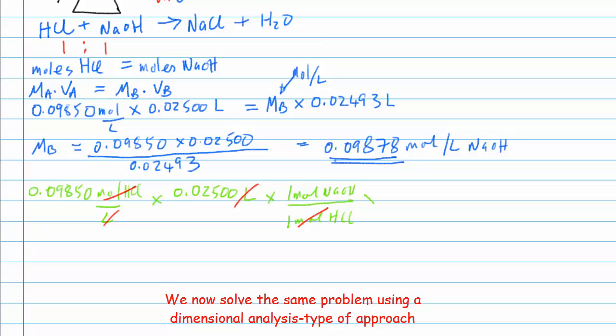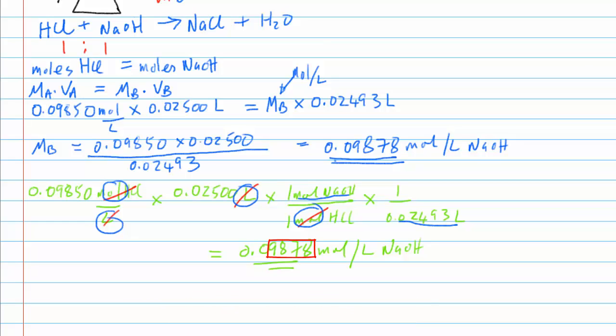Finally, we need to multiply this by this ratio here, 1 over 0.02493 liters. If we plug all of these values into our calculator, we should get the result of 0.09878 moles per liter of sodium hydroxide. Check back that all our units cancel, our moles of HCl cancel, our liters of HCl cancel. We're left with units of moles of sodium hydroxide divided by liters of sodium hydroxide. Moles per liter of sodium hydroxide. Again, four significant figures are needed in this final answer.